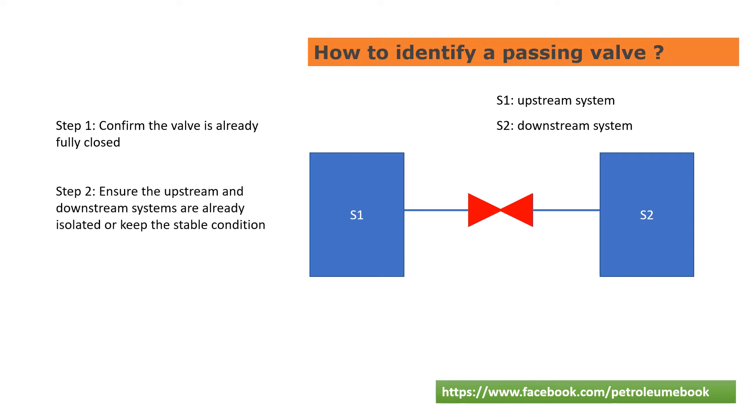Step two: ensure the upstream and downstream systems are already isolated or keep the stable condition. Step three: we will confirm if there's any change in the downstream and upstream of this valve. We can see more detail by some examples to apply this method.